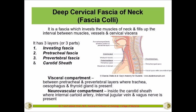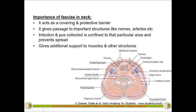The deep cervical fascia has three layers. The first is called the investing layer of the deep cervical fascia, which is the outermost covering. In this cross-section of the neck seen from above, the blue colored line just below the skin and the platysma muscle is the investing layer of deep cervical fascia. It covers the whole neck and gives extra support to the muscles in both the anterior and posterior parts — covering the sternocleidomastoid muscle in front and the trapezius muscle behind on either side.